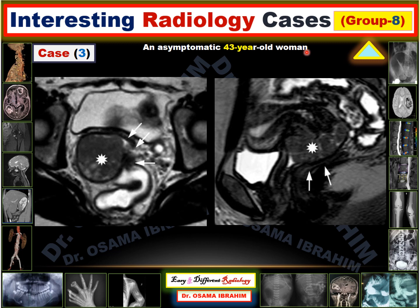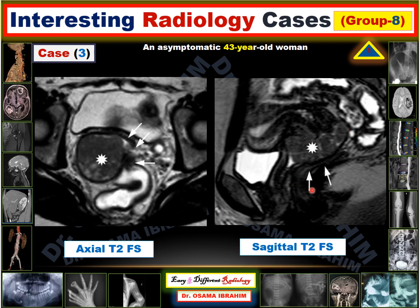Case three. An asymptomatic 43-year-old woman. On MRI, the urinary bladder appears bright, confirming this is a T2-weighted sequence in axial and sagittal views. The fat-suppressed T2 shows the urinary bladder, the uterus, and a lesion at the lower part of the uterus corresponding to the cervix. An axial image also shows extension of the lesion into the right parametrial region.